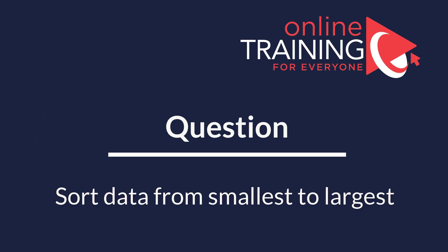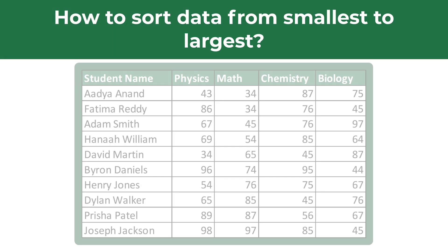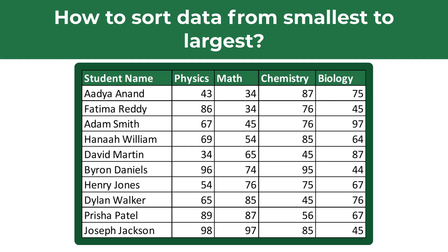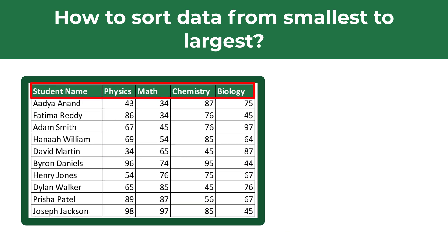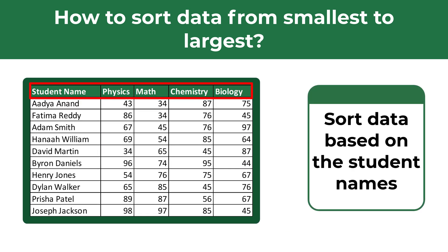A lot of times you might get a question on how to sort data in Excel from smallest to largest. For example, you might be presented with a data set showing student names and their grades on different subjects. On screen we see grades in physics, math, chemistry, and biology, and we need to sort this data set based on the student names.